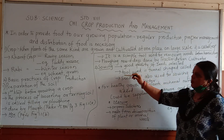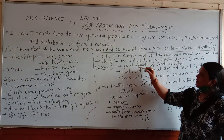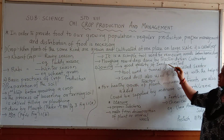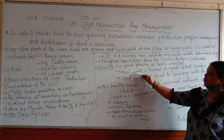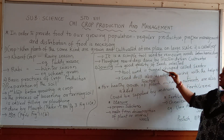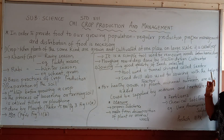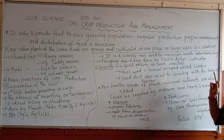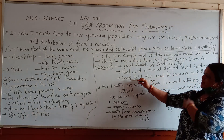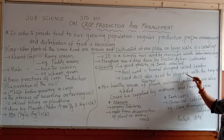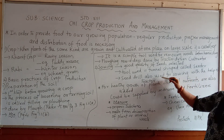The second point is sowing. Good quality seeds are selected. The tool used is funnel-shaped, called a seed drill or seeder. All the figures are there — please refer to them. Seeds are also sown with the help of a tractor.